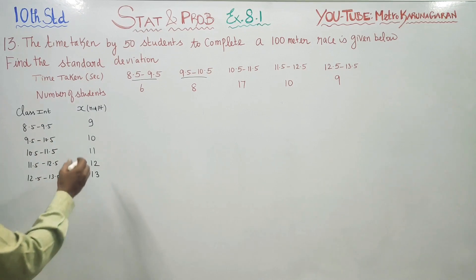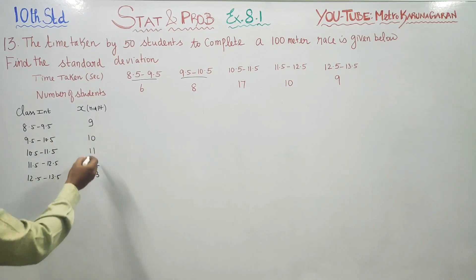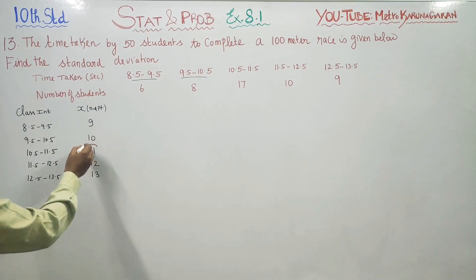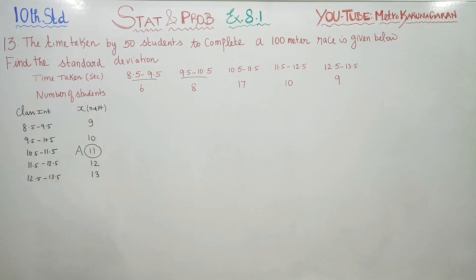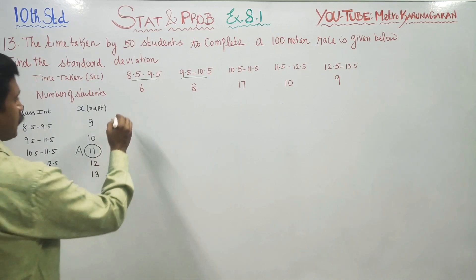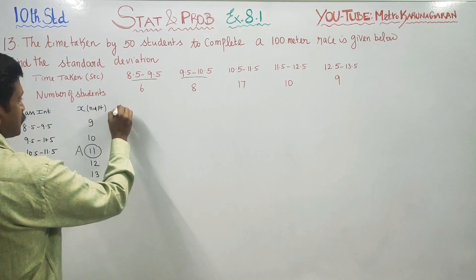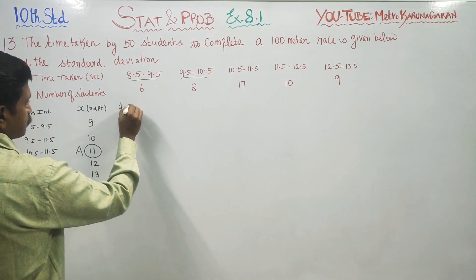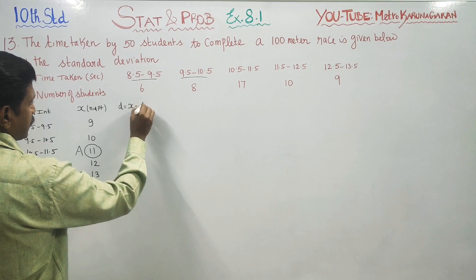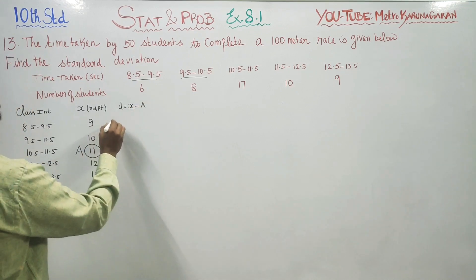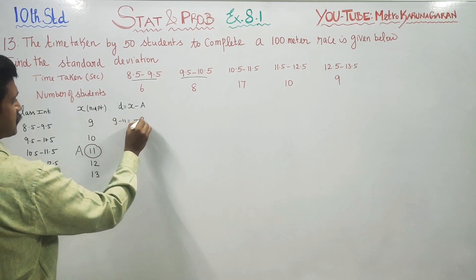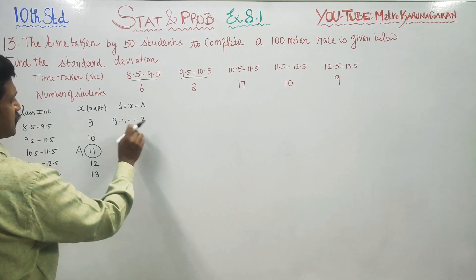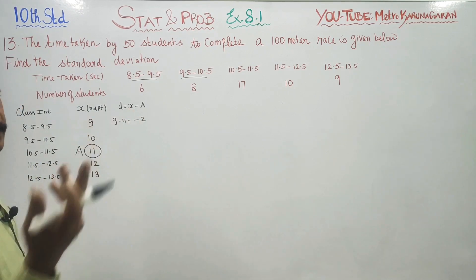I am going to choose one assumed mean here. I am going to choose 11 as my assumed mean. I am using a method called the assumed mean method. Therefore, I want the deviation. Deviation is equal to x minus a (x minus the assumed mean). Since the numbers are small, we use the step deviation method.